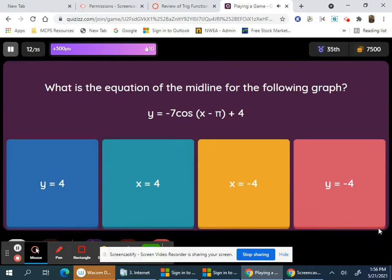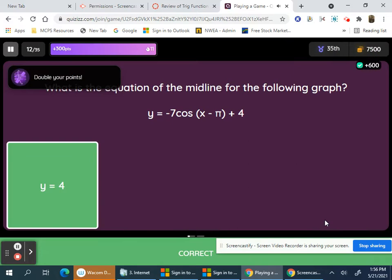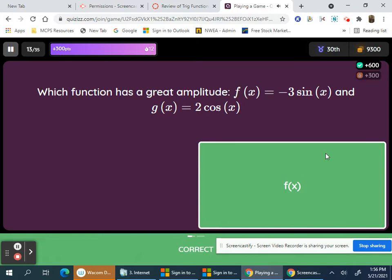What's the equation of the midline? Might as well use the y-values of these points here. It's going to be y equal to 4, this number here. What function? I think this is supposed to say the greater amplitude. This has an amplitude of 3 and this one has 2.